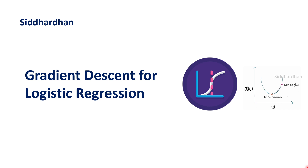Logistic regression is one of the most important models in machine learning. In my previous videos I explained the intuition and math behind logistic regression, and what the loss function and cost function are for logistic regression — which is very different from linear regression. In today's video let us understand gradient descent particularly for logistic regression, as there will be quite a change in the derivatives compared to linear regression.